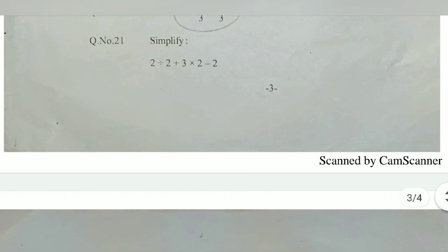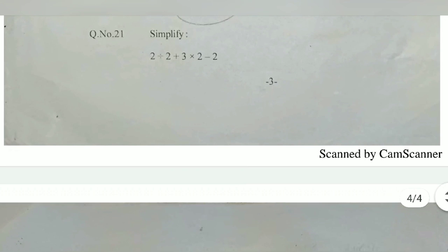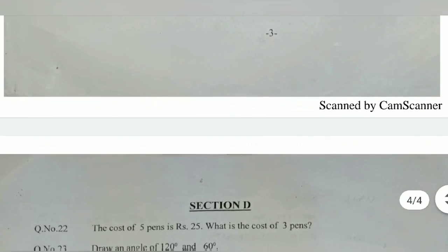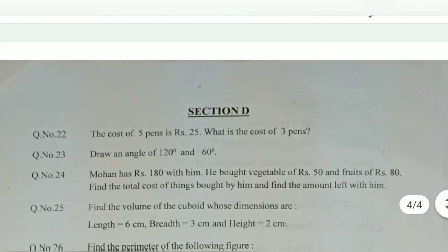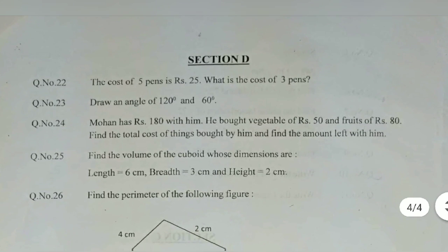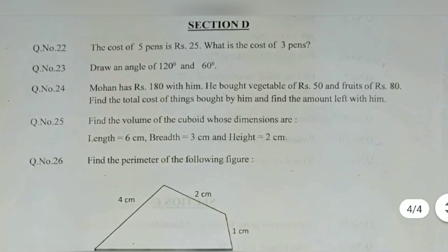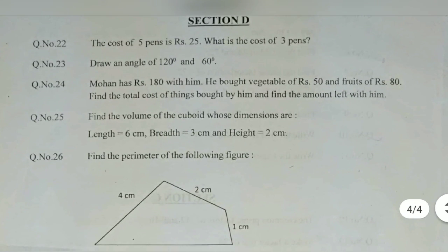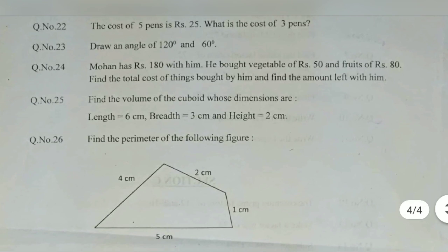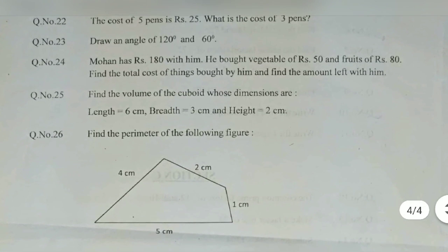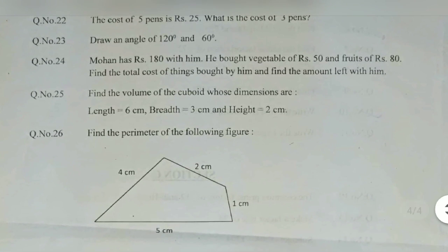Like that way you can do. The cost of 5 pens is 25, what is the cost of 3 pens? Find out first 1 pen cost, that is 25 divided by 5, that is 5. 5 into 3 - 1 pen is 5 rupees and 3 pen cost is 3 into 5, 15.